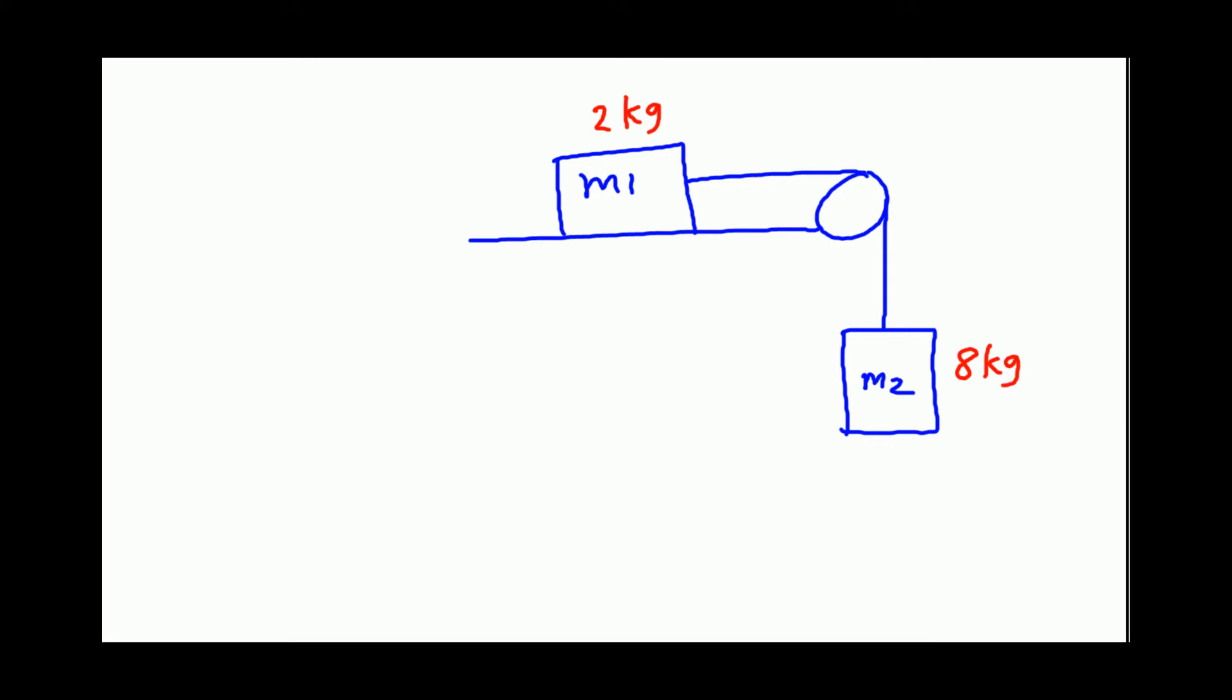For mass M1, let's isolate mass M1. What do we see? We see normal force acting vertically up, gravitational force acting vertically down, and we see this thread. That is the tension to the right. Tension is a pulling force and it is to the right.